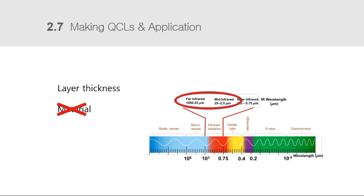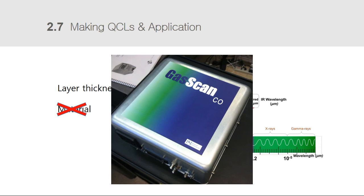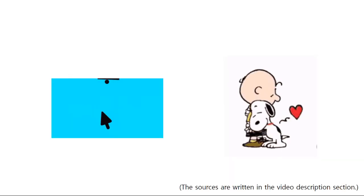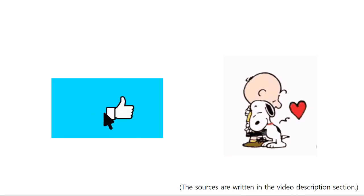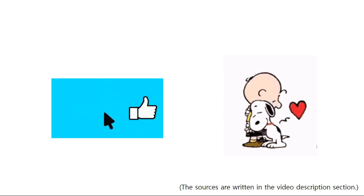Using the advantages of QCLs, the most important application is in gas sensing and measurement. Systems based on widely tunable QCLs can be used to measure multiple gas species, and narrowly targeted systems can detect and measure gas concentrations in the parts-per-trillion range. I have explained quantum cascade lasers and tried to make it easy to understand. I hope everyone can understand what QCL is. If you liked the video, don't forget to like and subscribe. Thank you very much for watching.